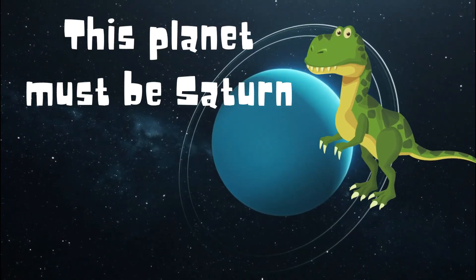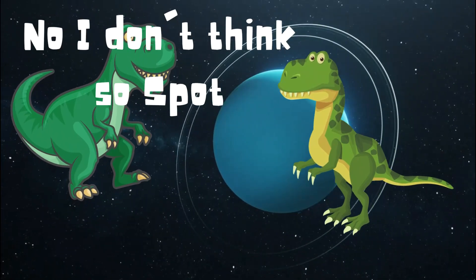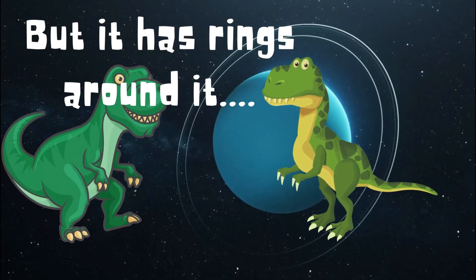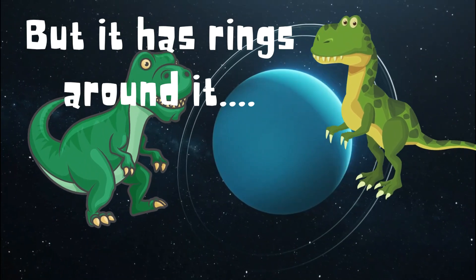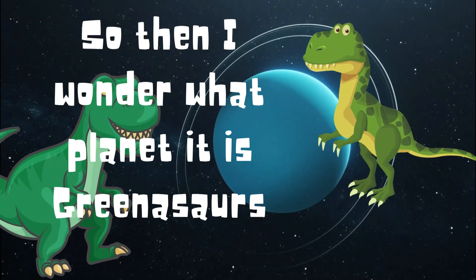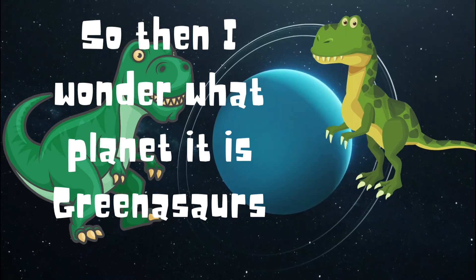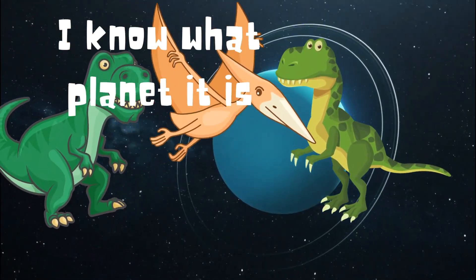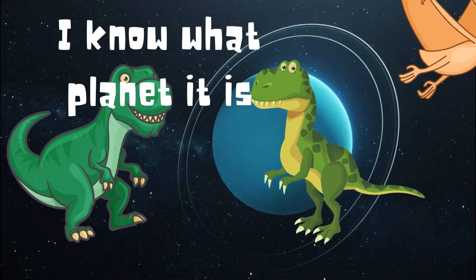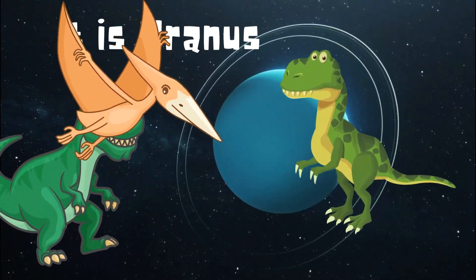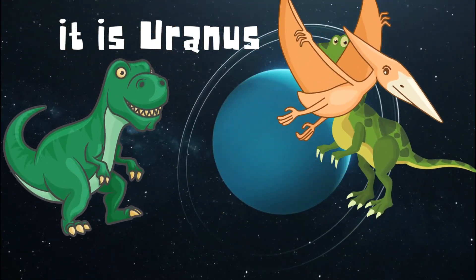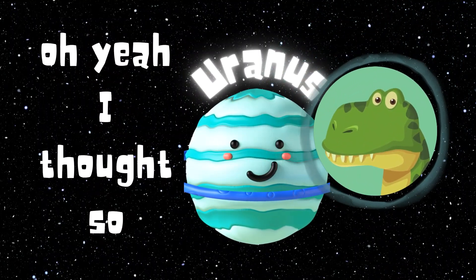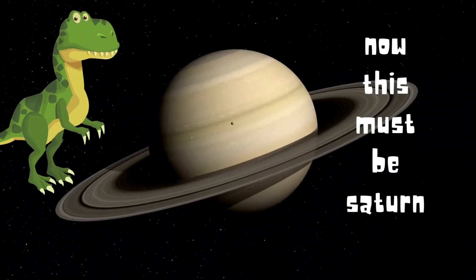This planet must be Saturn. No, I don't think so, Spot. But it has rings around it. So then I wonder what planet it is, Greenosaurus. I know what planet it is. It is Uranus. Oh yeah, I thought so.